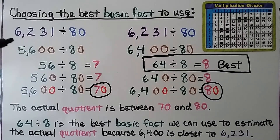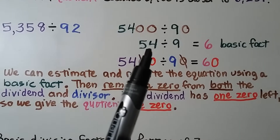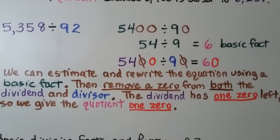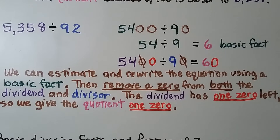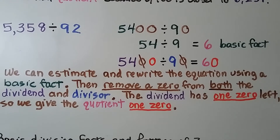If we're not sure which estimate has the smallest difference, we can always subtract. For 5,358 divided by 92, we can use the basic fact 54 divided by 9 equals 6, giving us 5,400 divided by 90. We can remove a zero from both 5,400 and 90, leaving 540 divided by 9, which equals 60. The dividend has one zero remaining beyond the basic fact, so we give the quotient one zero, making it 60.